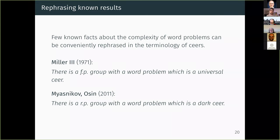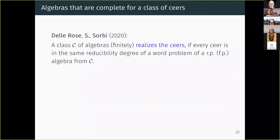The proof uses Golod-Shafarevich: the defining relations are constructed so sparsely that by this classical result from group theory the group itself is necessarily infinite. It is still open whether there exists a finitely presented group with a word problem that is a dark ceer — and probably this question is really hard. Now let's move to our work. We define: a class C of algebras 'realizes the ceers' if every ceer is in the same reducibility degree as a word problem of a recursively presented member of this class, and similarly for 'finitely realizes.'